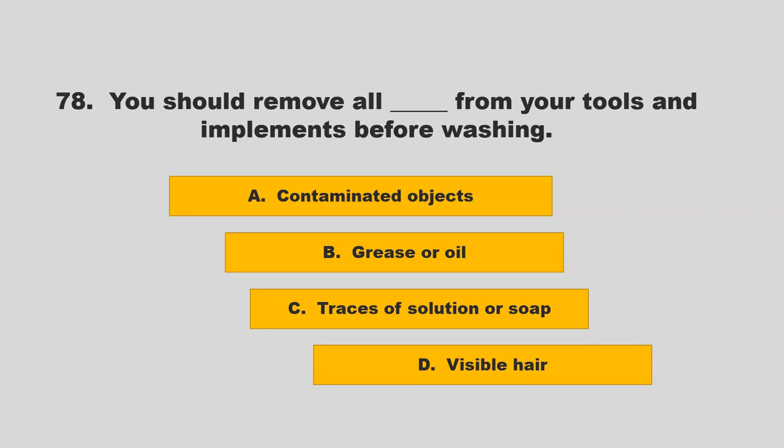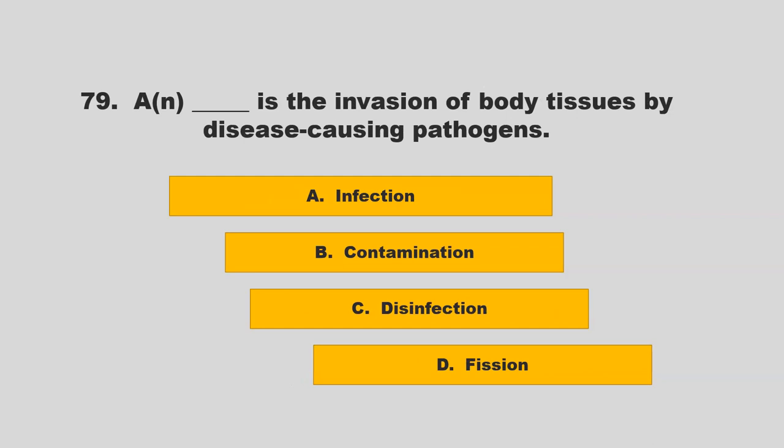You should remove all blank from your tools and implements before washing. Options: contaminated objects, grease or oil, traces of solution or soap, or visible hair. The correct answer is D: visible hair.